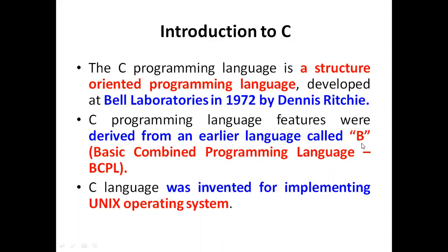Previously the language was called B, and after some upgradations people changed the name. Before the B language, it was called BCPL — Basic Combined Programming Language. C was developed for the purpose of developing a unique operating system, specifically to develop system-based software.